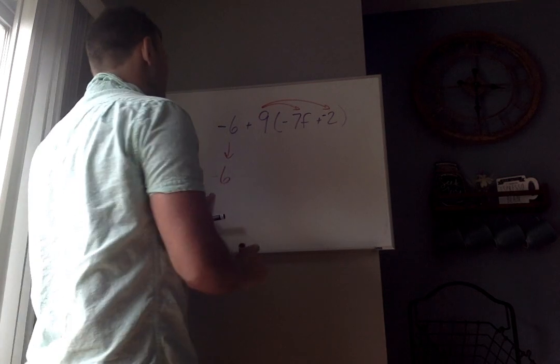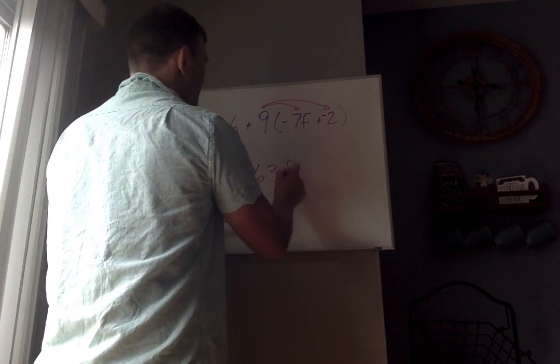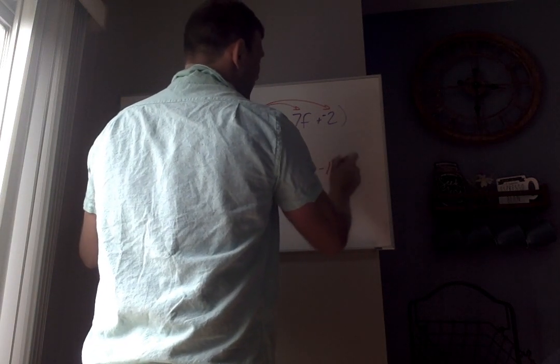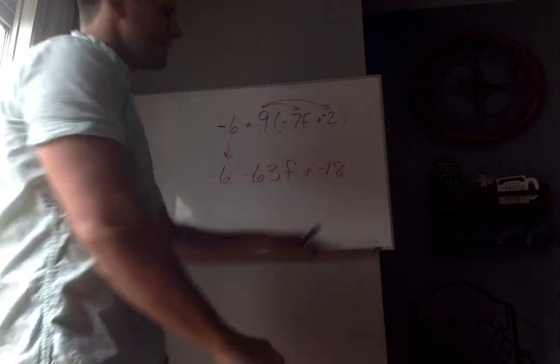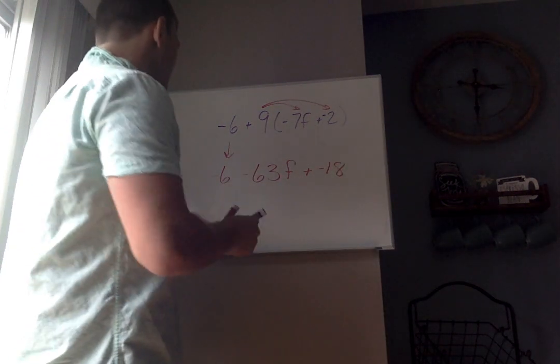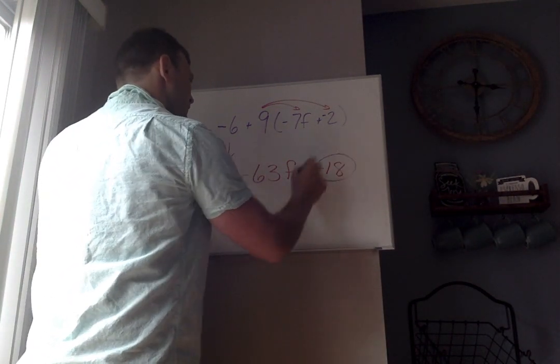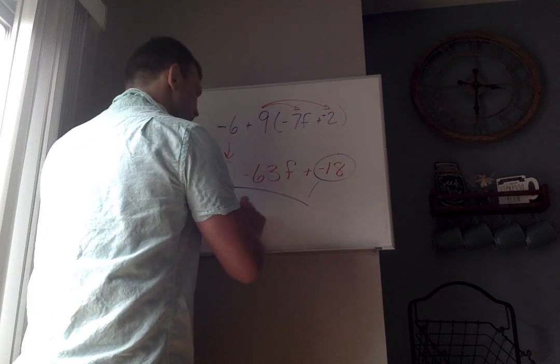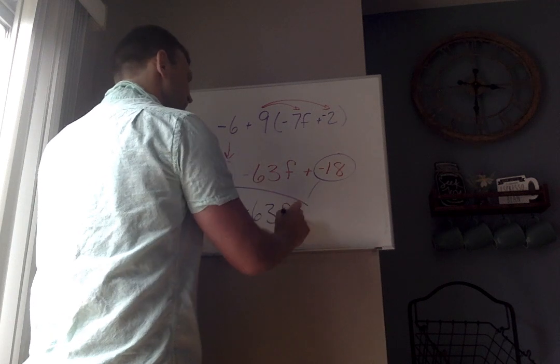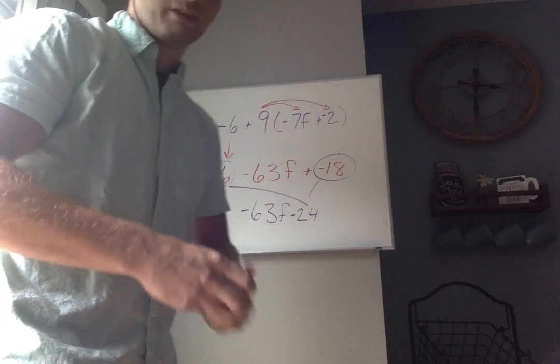He has nothing going on just yet, so I'm going to drop that negative 6. So 9 times negative 7 is negative 63f. 9 times negative 2 is negative 18. You could write that as minus 18 or plus negative 18. Now I have two things that are similar. These guys, notice they both don't have a variable on it. So if he comes straight down, that's negative 63f. Negative 6 plus negative 18 is negative 24. So I'm going to write that as negative 63f minus 24.